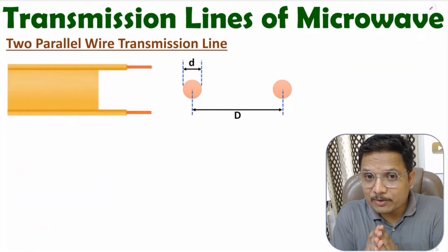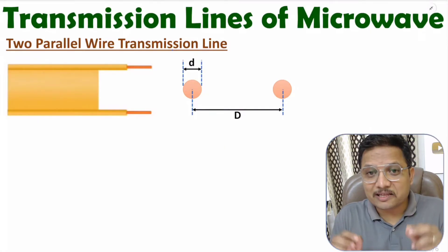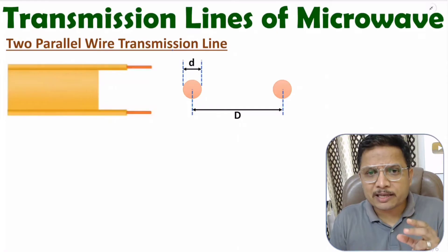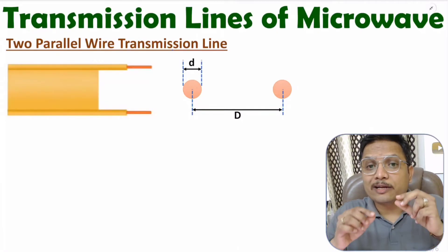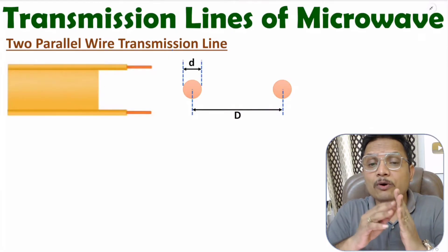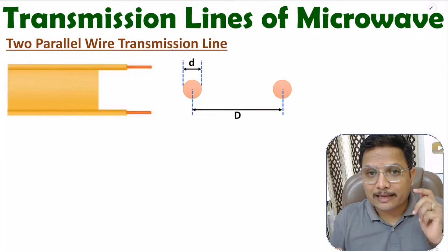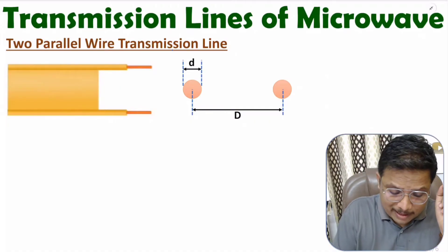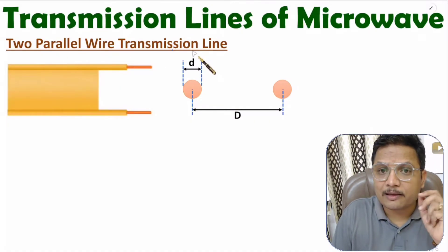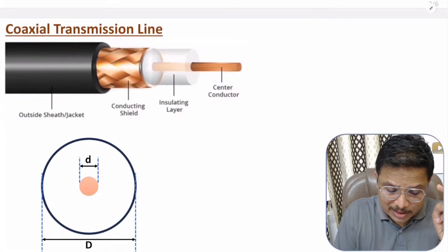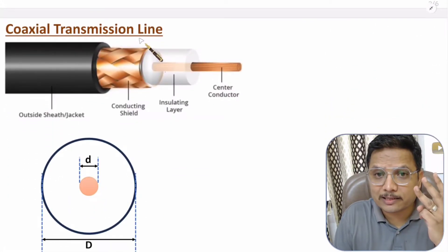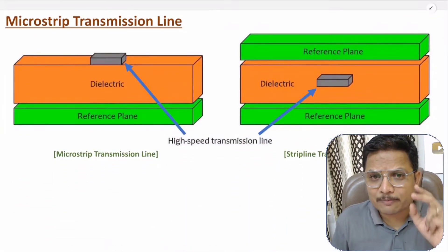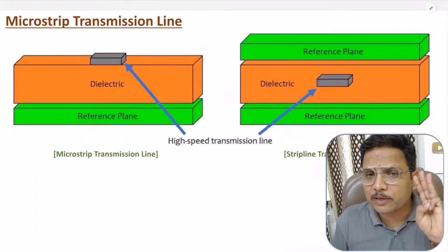Hello friends, welcome to Engineering Panta family. In this video, I will be discussing about transmission lines of microwave. Transmission line is used to transfer signal from one end to another end. In general, there are three types of transmission lines: the two parallel wire transmission line, the coaxial transmission line, and the microstrip transmission line. I will explain these three transmission lines with great clarity.